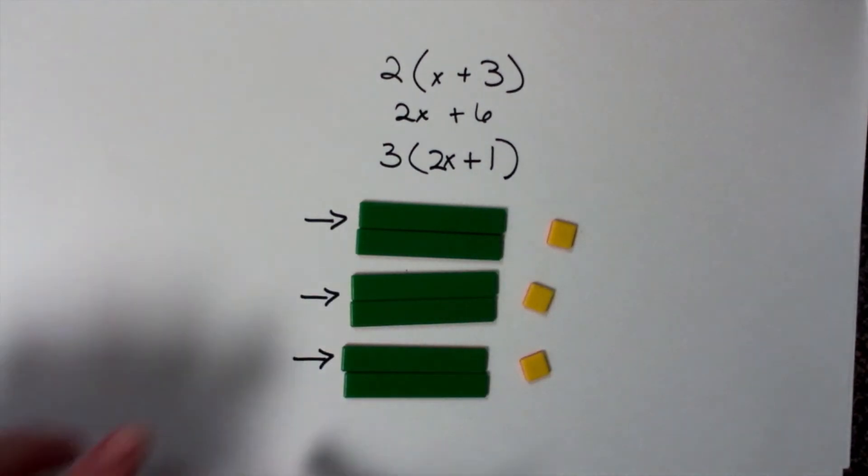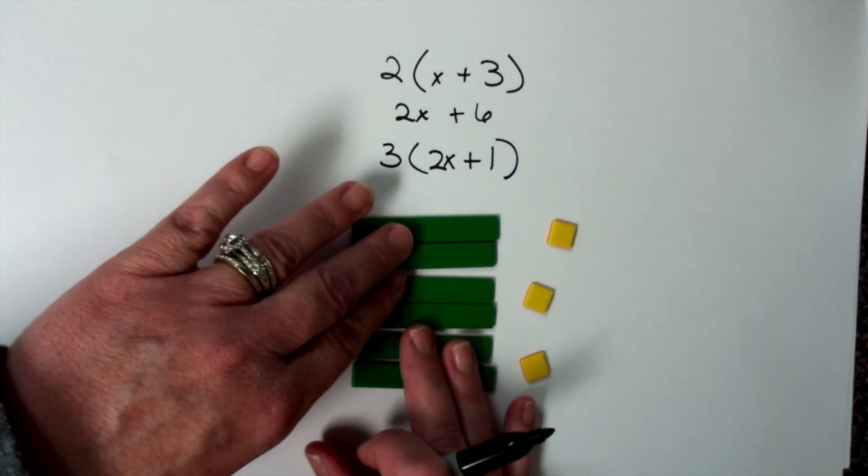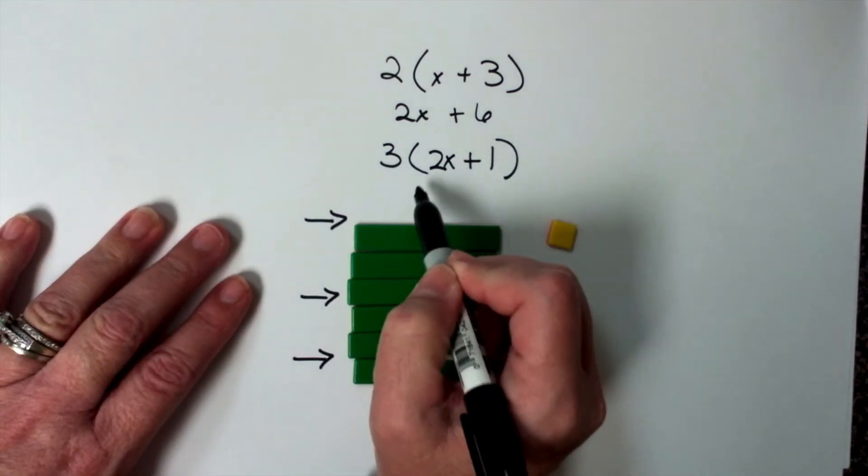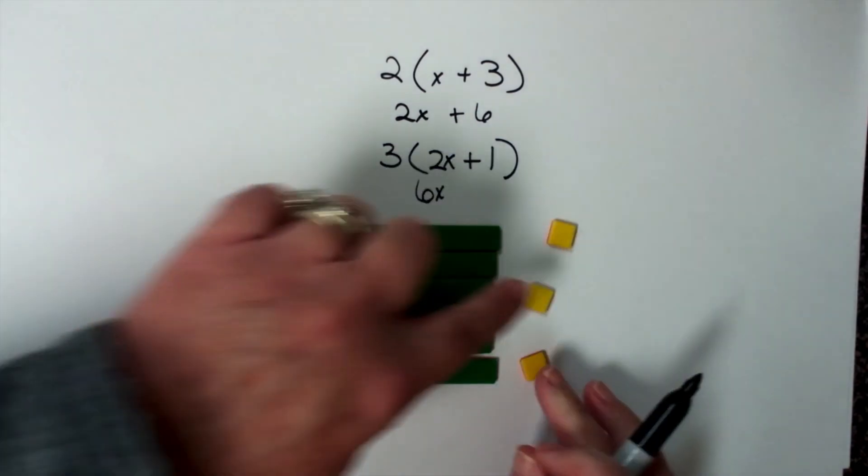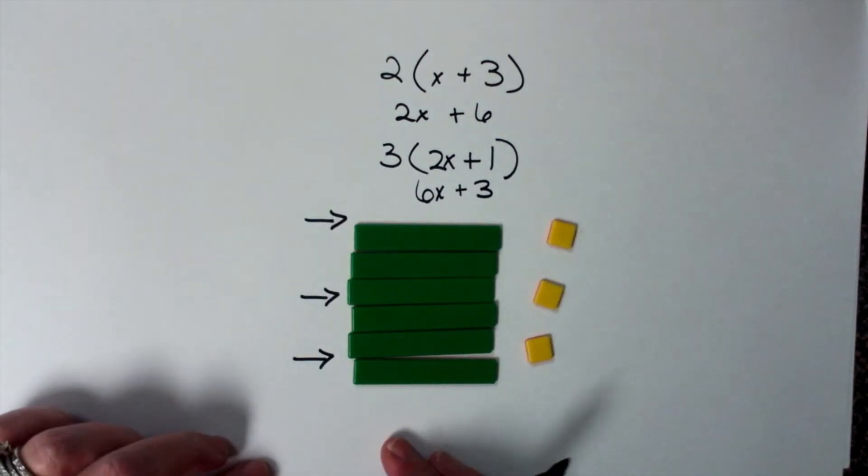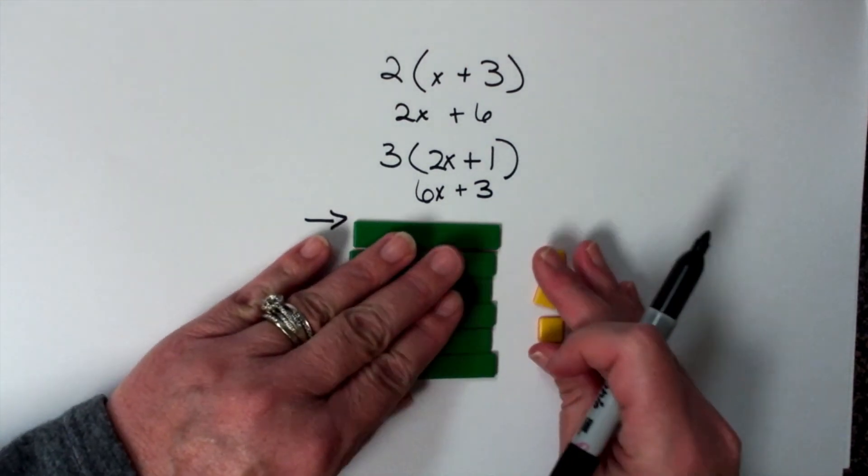Now, do I have like terms? Well, these all look alike. And how many do I have? 1, 2, 3, 4, 5, 6. So I have 6x. And I have 3 ones. So now I have 6x plus 3. These are not the same.